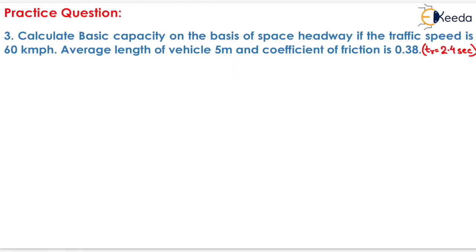The question is: calculate basic capacity on the basis of space headway if the traffic speed is 60 km per hour, average length of vehicle is 5 meters, and the coefficient of friction is 0.38. The reaction time is given as 2.4 seconds. For finding the basic capacity on the basis of space headway,